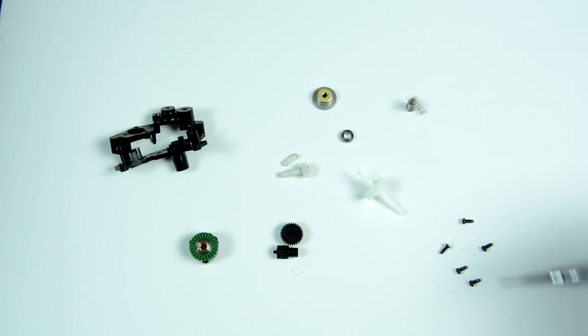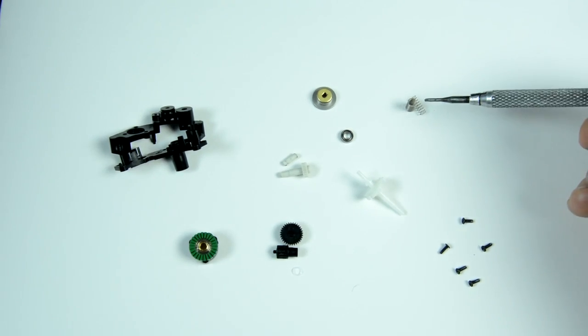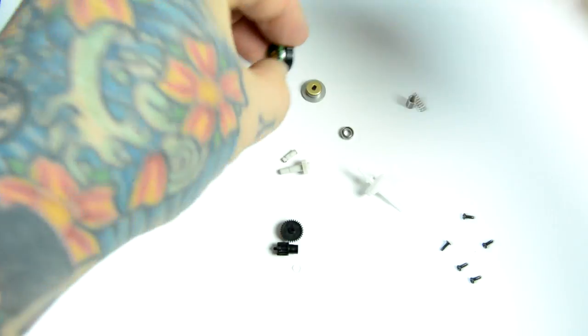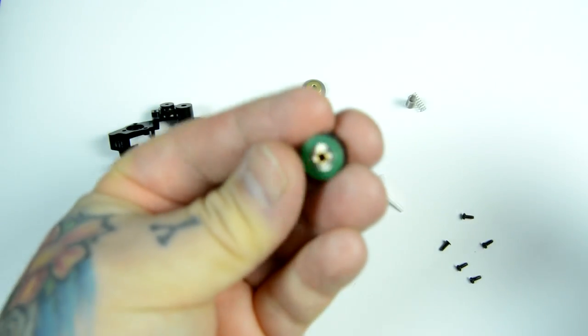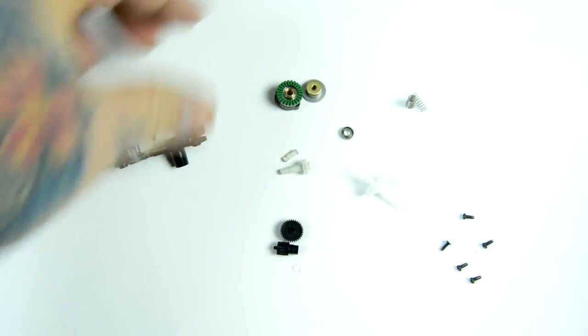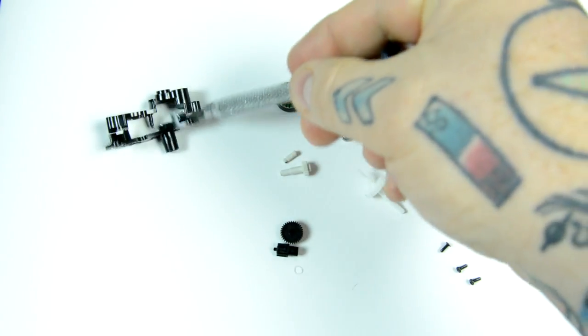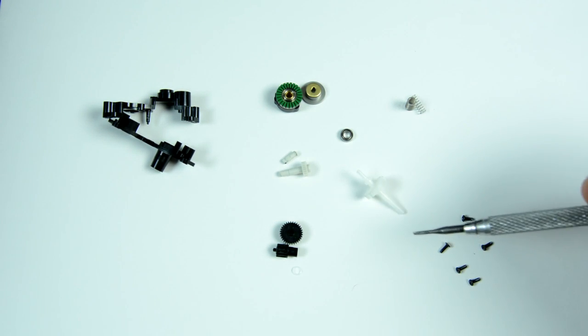This is the entire assembly, five screws, two springs. This is the actual motor right here. This is the two-piece assembly that is held together with the five screws.